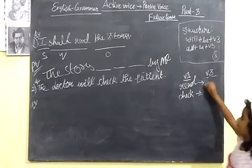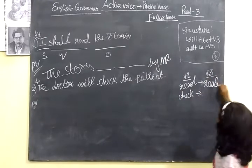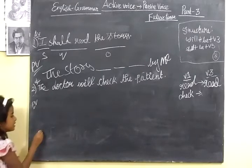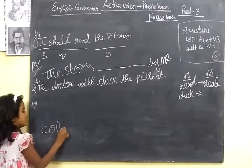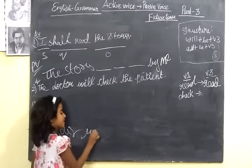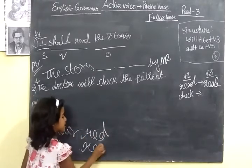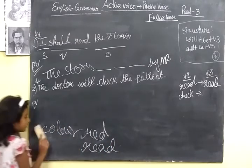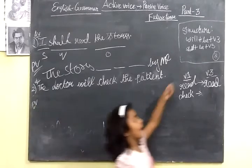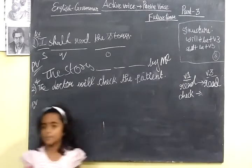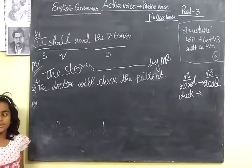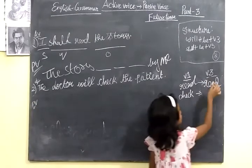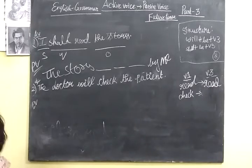The third form of 'read' is 'read' — spelled R-E-A-D, but pronounced 'red'. You should not confuse it with the color red. The spelling is the same as 'read,' but the pronunciation changes. So the third form is 'read' (pronounced 'red').